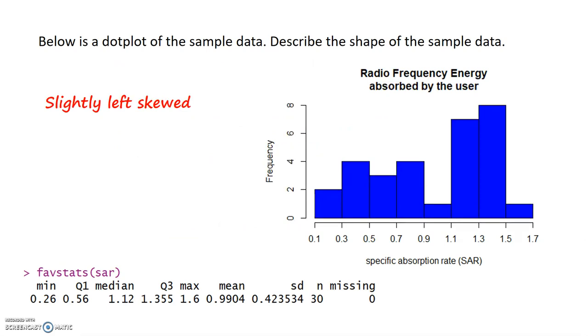Making a graph of the sample data, I have a histogram here. It does look like there's a little bit of a left skewed shape happening. My sample size, as I can tell from the fav stats at the bottom of the screen, is 30. We've been told that a sample size of 30 or more can be considered large enough. So we're right on the edge, but I might be able to say my sample size is large enough.